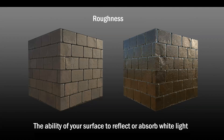Here I've changed it to have an extremely white Metallic Map and also a very black Roughness Map, showing what it would look like if you had a very reflective metallic object. Obviously not applicable to bricks unless you coated them with something. You can see a lot of light being reflected and a lot of the environment coming into the texture. White metalness plus black roughness is the correct way to get a good reflective material.